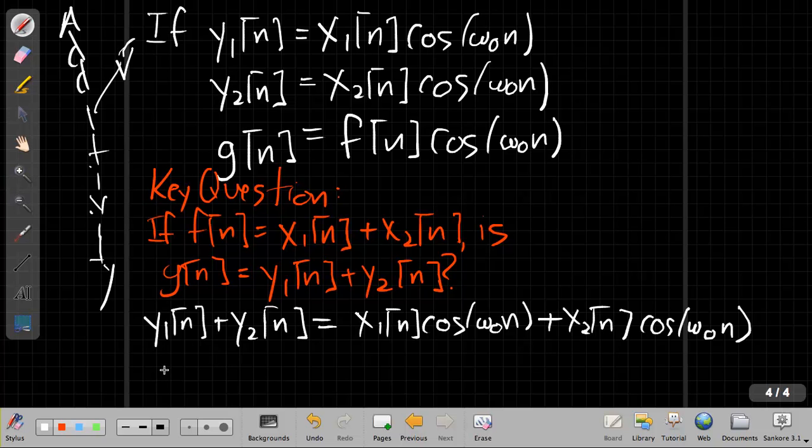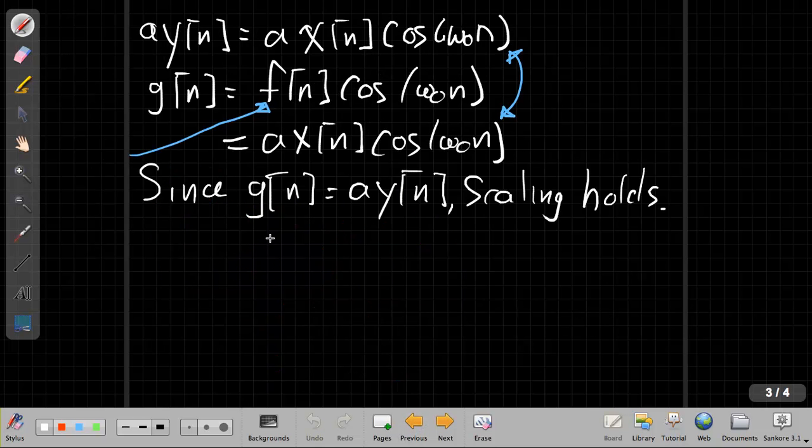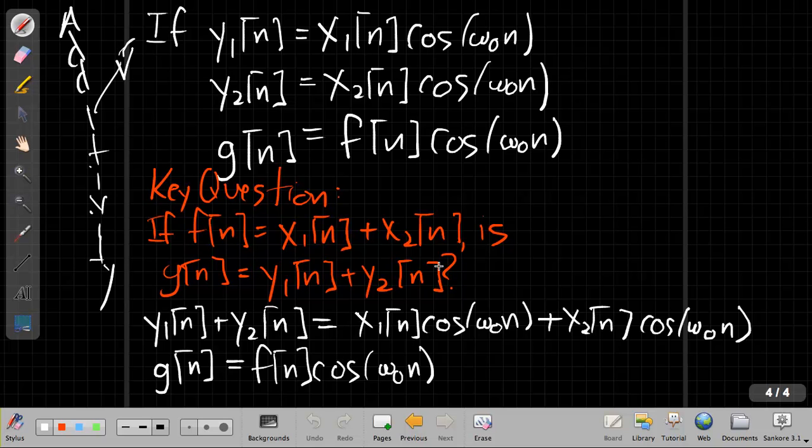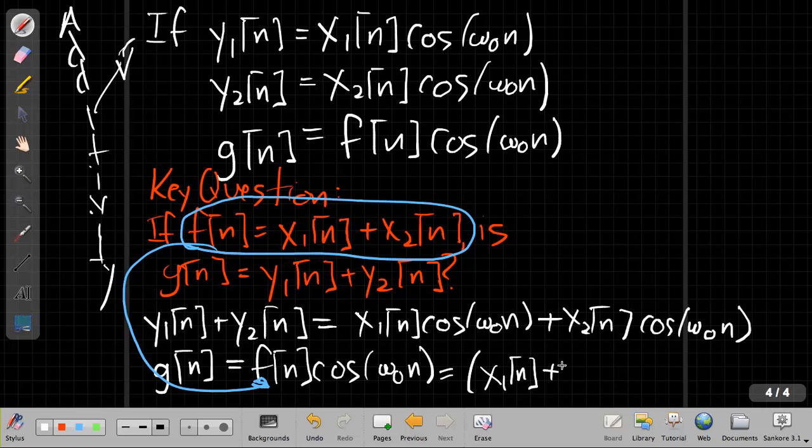Now, we go on for g of n. We say, well, g of n is f of n times cos omega not n. And to get f of n, we go back up. From the key question right here, I take this piece and plug it in for f of n. So I'm taking this stuff here, bringing it down here and plugging it in for f of n. And so when I do that, I get x1 of n plus x2 of n times cos of omega not n. And if I look at these two for a minute, these are the same.